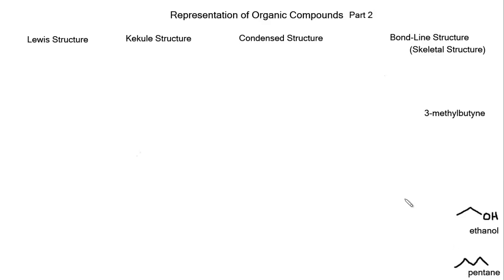For this video we're going to dive into a couple more complex structures. For the first one we're going to look at 3-methylbutyne. So butyne rather than butane — if it was butane we'd have a four-carbon chain. Butane with four carbons would look similar to pentane except we'd only have four carbons: one, two, three, four. So this is butane.